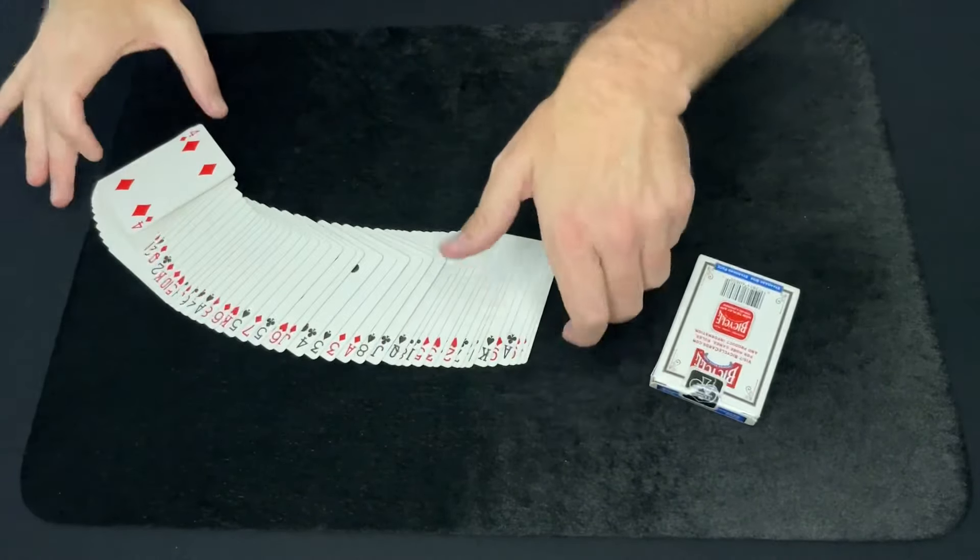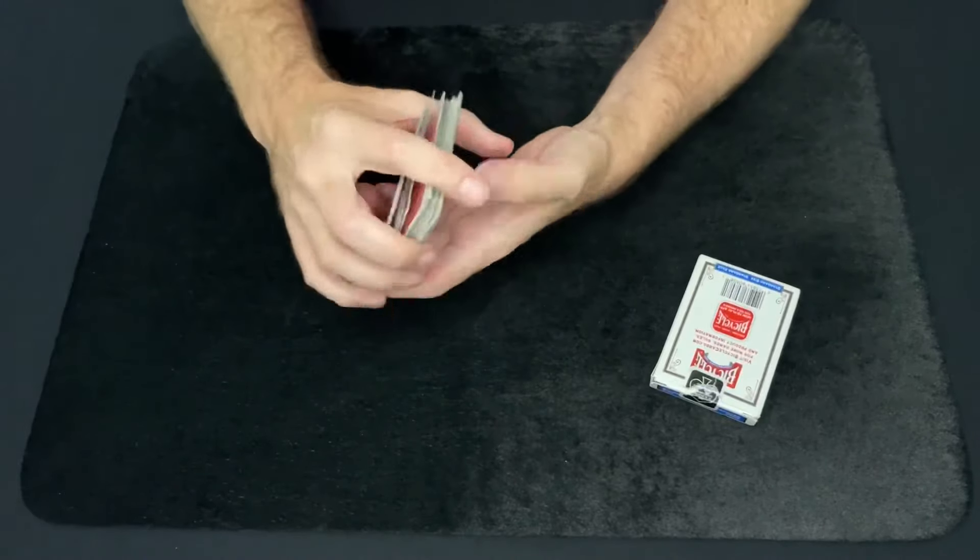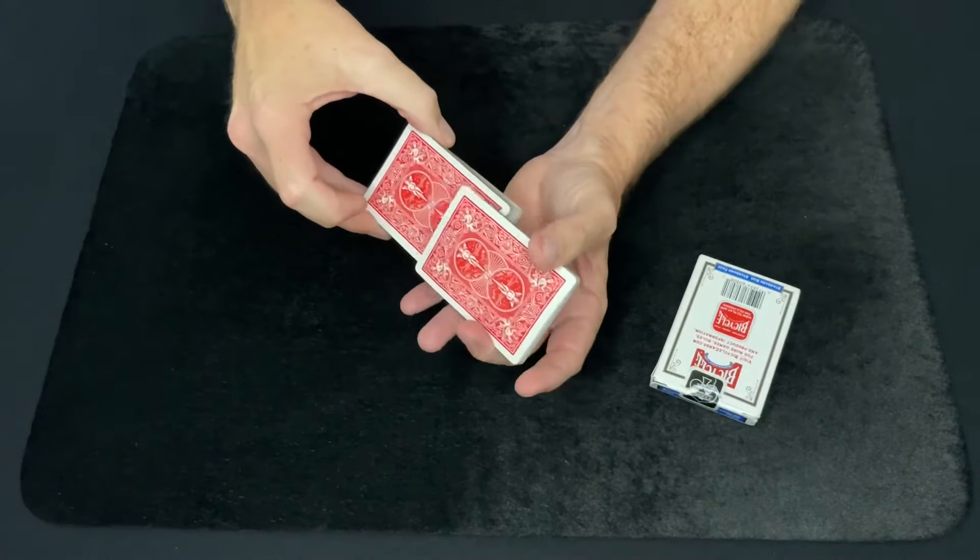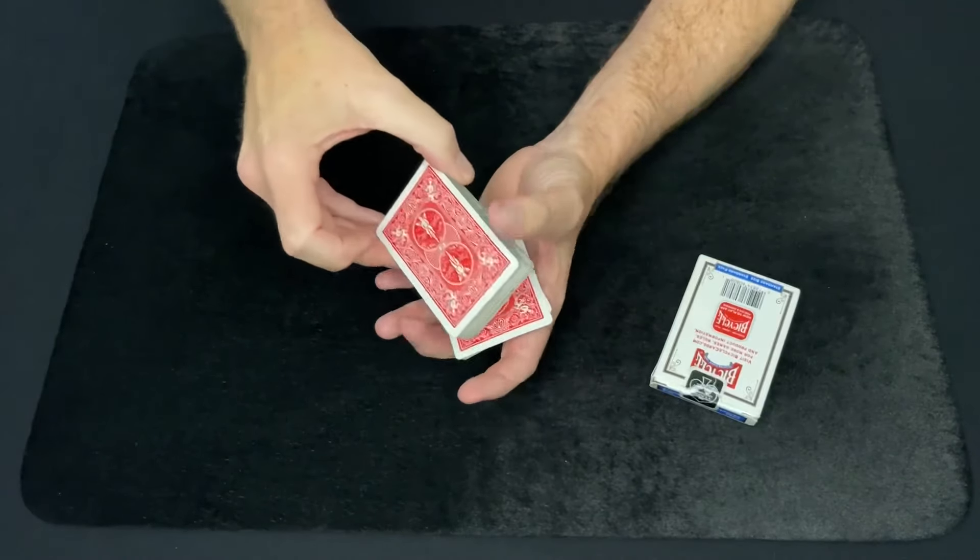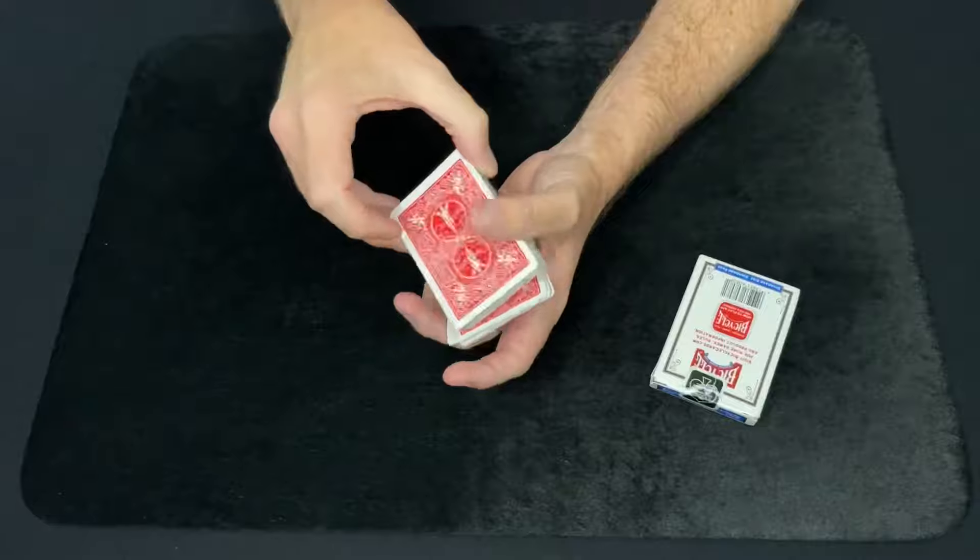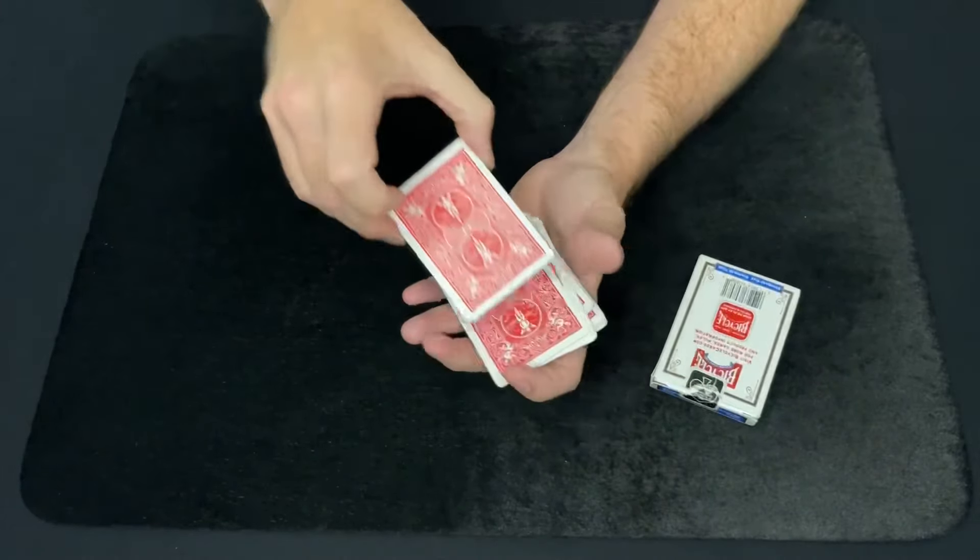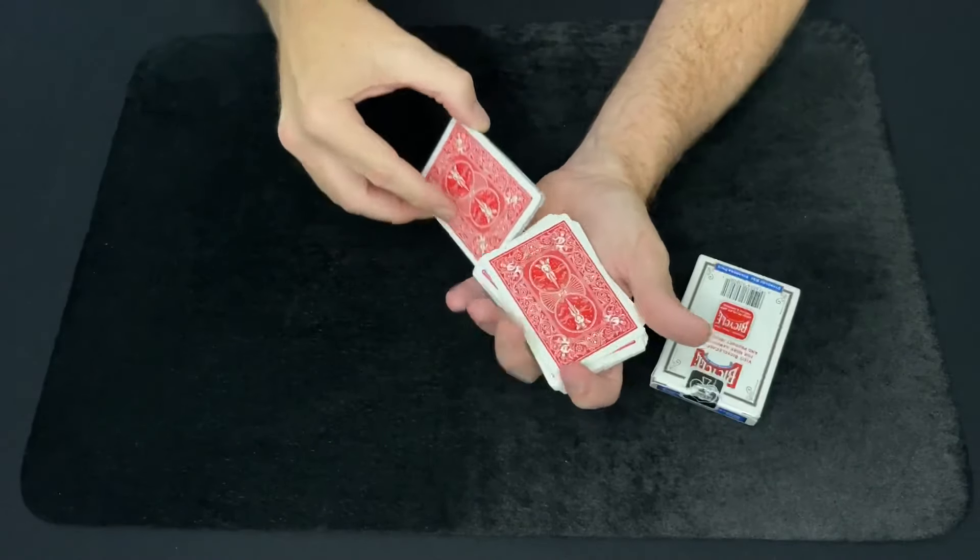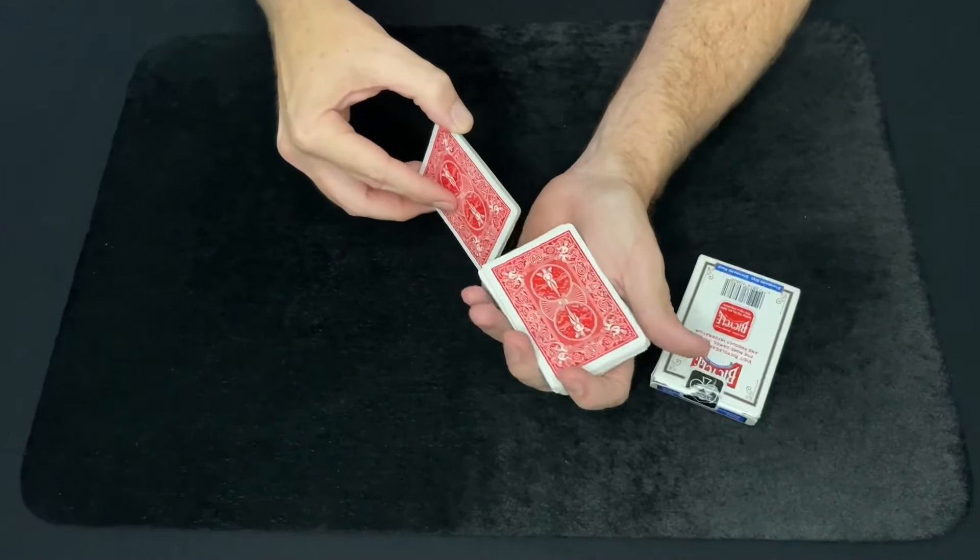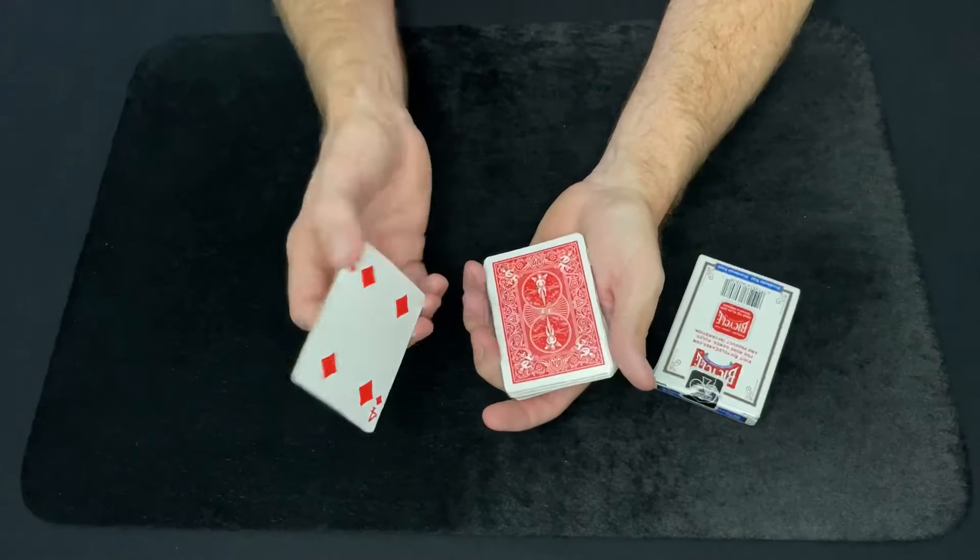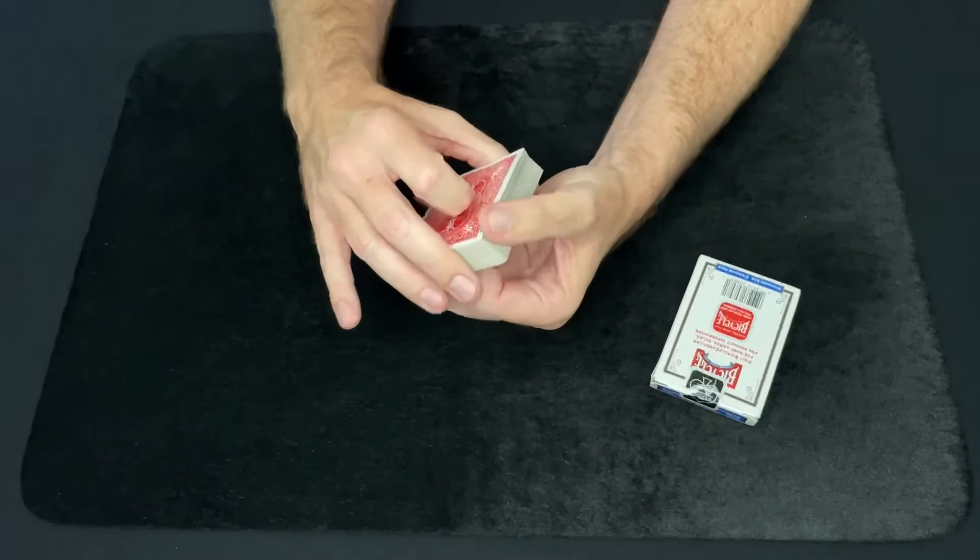So I force the card. It's just a regular deck of cards, and I force the card using the Hindu shuffle method, which is just forcing the bottom card. And all you're doing is taking cards off the top of the deck, dropping in your hand, and taking cards off the top, dropping them in your hand, maintaining this bottom card. And you do this over and over and over again. You're still maintaining the card. So wherever they tell you to stop, you just stop, make it look like you're straightening up the cards, and then showing this card, boom, the four of diamonds.